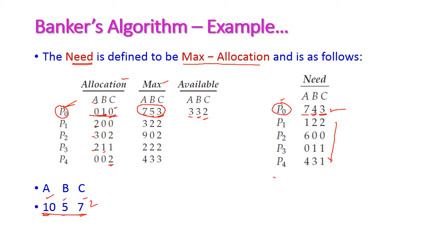For P4: type A maximum requirement is 4, allocated is 0, so required is 4. Type B maximum is 3, allocated is 0, so further requirement is 3. Type C maximum is 3, allocated is 2, so 3 - 2 = 1 resource further required. Likewise we need to compute the need for all processes.